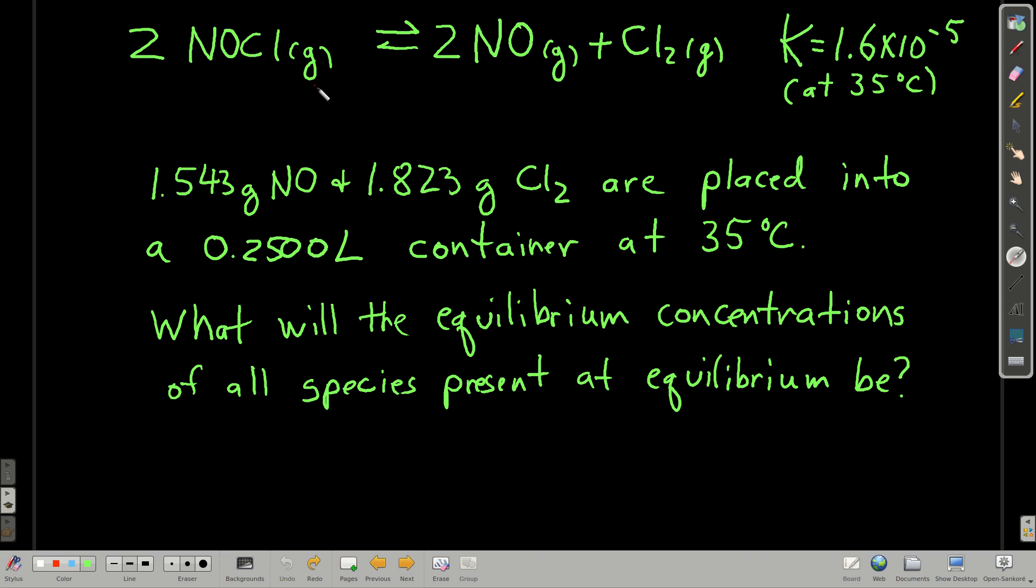So we have this equilibrium here. This molecule dissociating into two molecules of nitrogen monoxide and a molecule of chlorine, and the equilibrium constant is 1.6 times 10 to the minus fifth at 35 Celsius. So let's say we start out with this many grams of nitrogen monoxide, this many grams of chlorine in a 0.2500 liter container, 250 mils at this temperature. What will the equilibrium concentrations of all species present at equilibrium be?